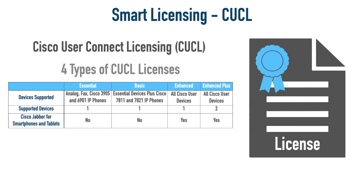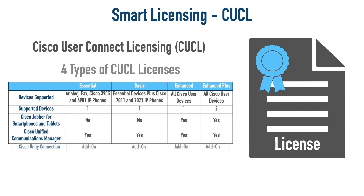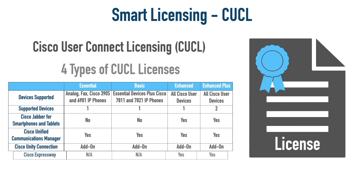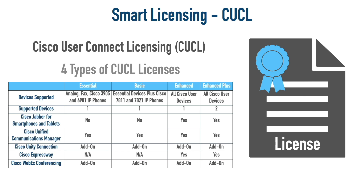If you have soft clients like Cisco Jabber running on tablets or smartphones, that's not available on Essential or Basic — only on Enhanced or Enhanced Plus. All tiers include Cisco Unified Communications Manager. However, since CUCL is per-user per-application, adding Cisco Unity Connection for voice messaging requires an add-on license. Cisco Expressway for firewall traversal is not available on Essential or Basic, but is available on Enhanced and Enhanced Plus. Cisco WebEx conferencing is an add-on across all CUCL tiers.